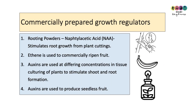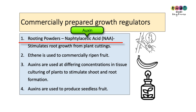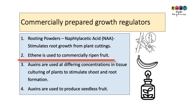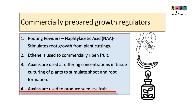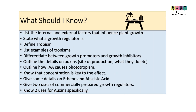You need to give examples of commercially prepared growth regulators. One auxin example is rooting powders: naphthylacetic acid (NAA) is a rooting powder — if you take a cutting from a plant and dip it into rooting powder it will stimulate roots to grow, giving a new plant. Ethene is the gas used to commercially ripen fruit. Auxins are also used in tissue culturing for plants, where different concentrations stimulate shoots or roots to grow, and auxins are used in the production of seedless fruit.